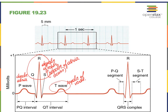So once again: the P wave — depolarization of the atria; QRS — depolarization of the ventricles, with the repolarization of the atria completely covered up within the QRS complex because it is so complex; and then the T wave — the repolarization of the ventricles. An EKG is not illustrating when the atria versus the ventricles contract, but we can deduce from an EKG when the atria and the ventricles contract.